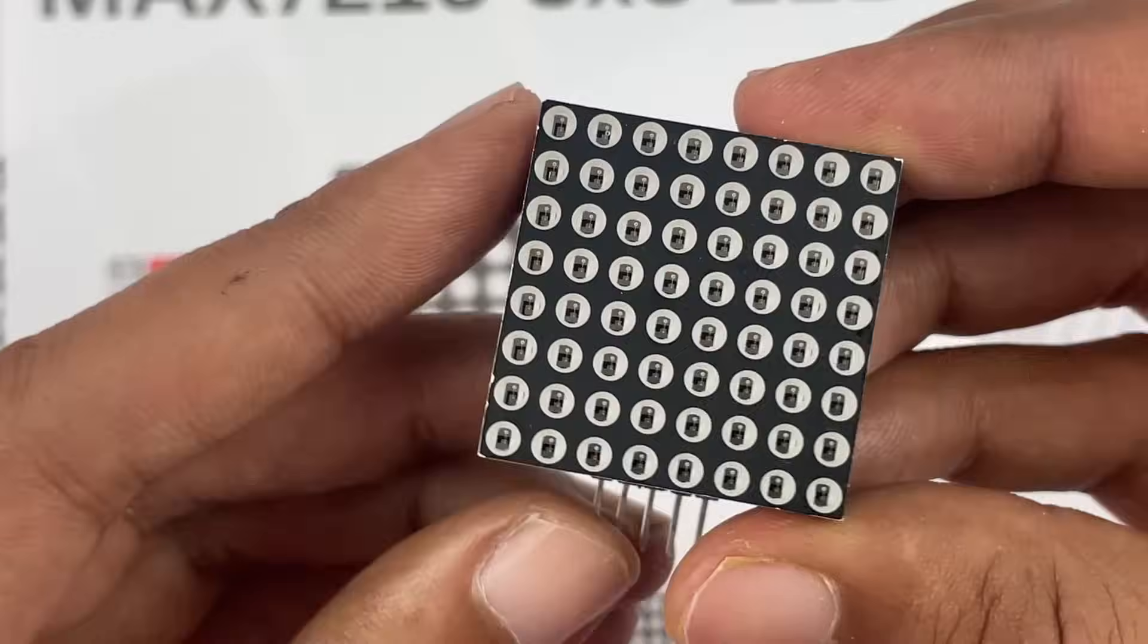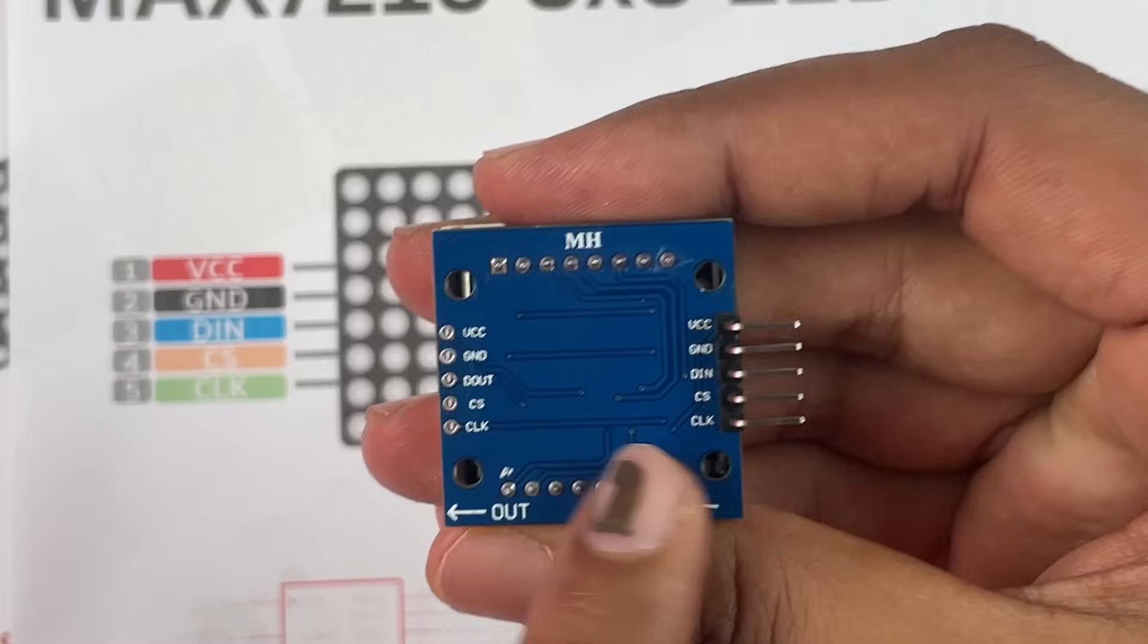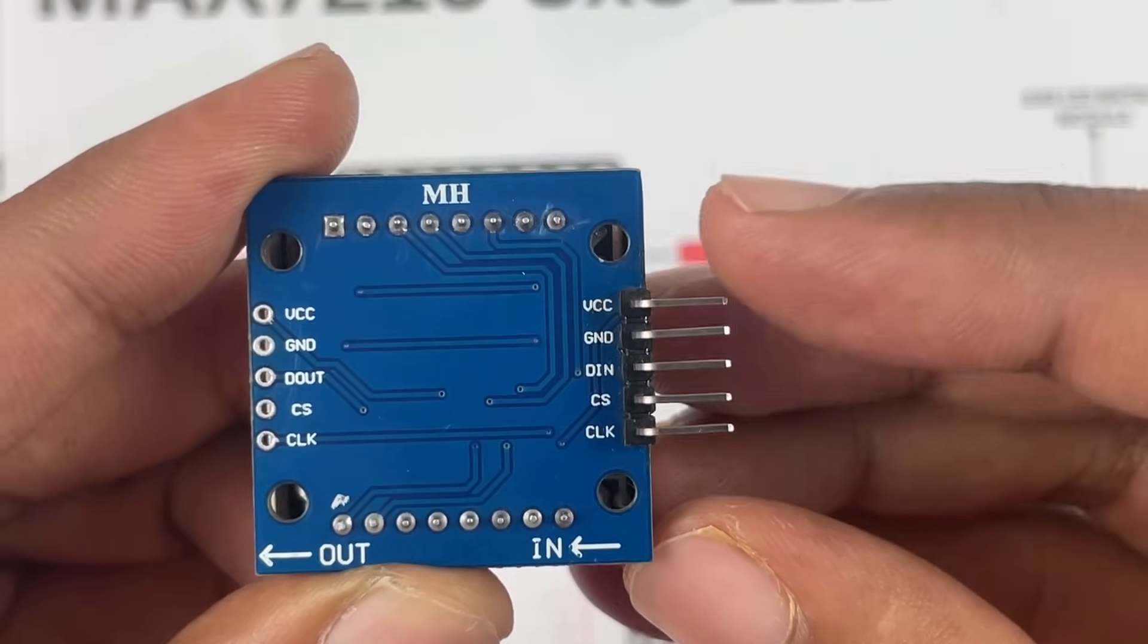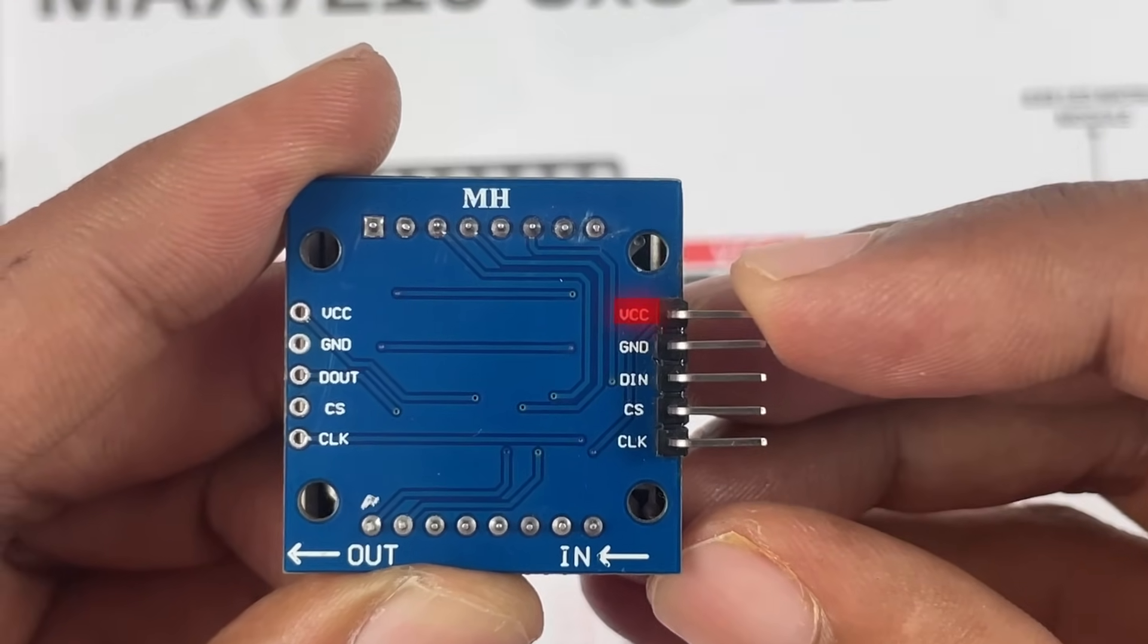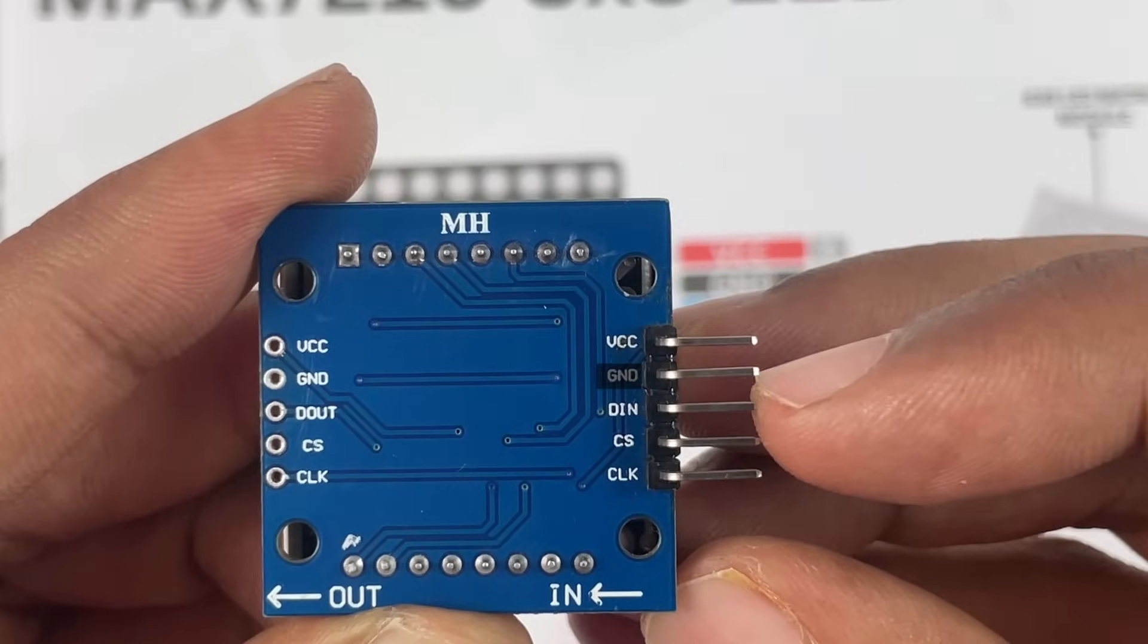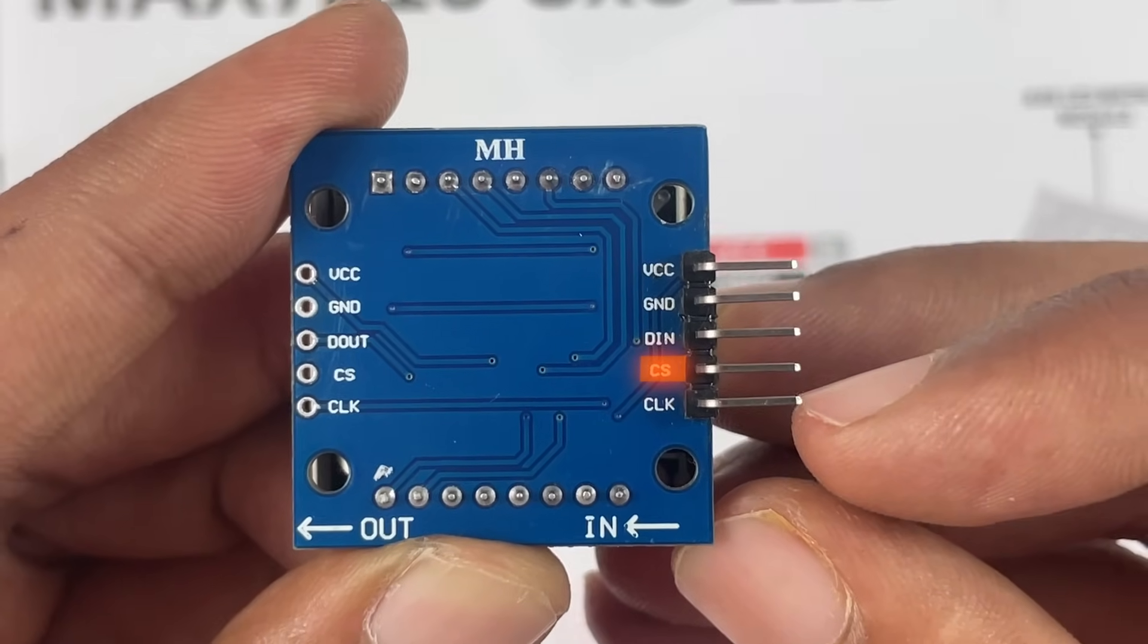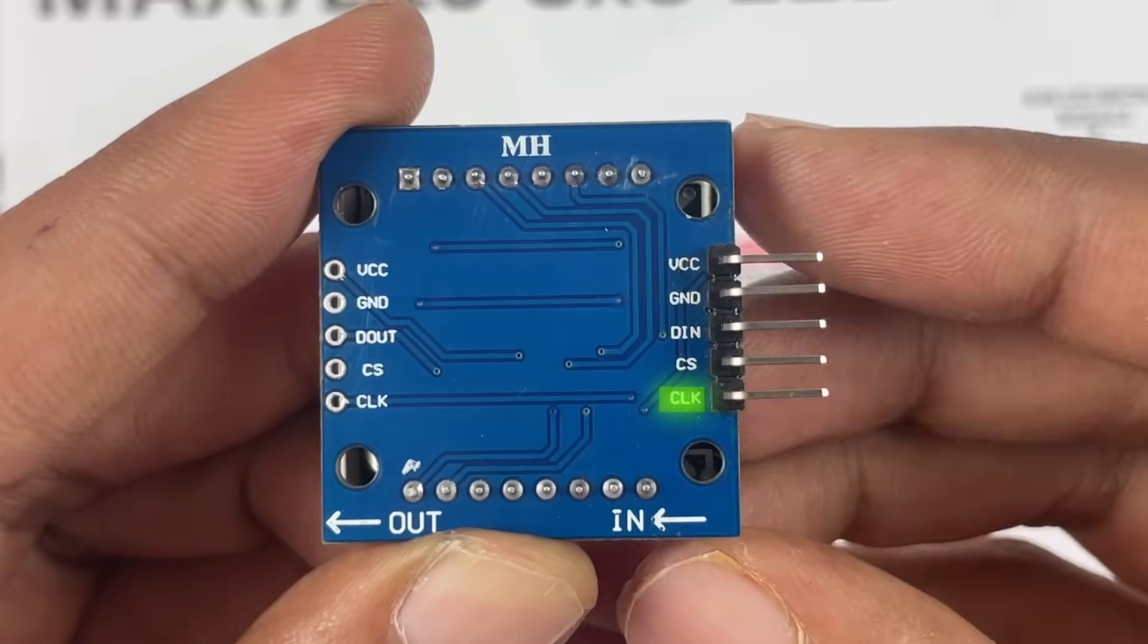Taking a look at the pinout, you can see that our module has pins on both sides. Normally we will be using only these five pins: the VCC where we provide 5 volts, the ground pin, the DIN which stands for data in, the CS which stands for chip select, and the CLK which stands for clock.